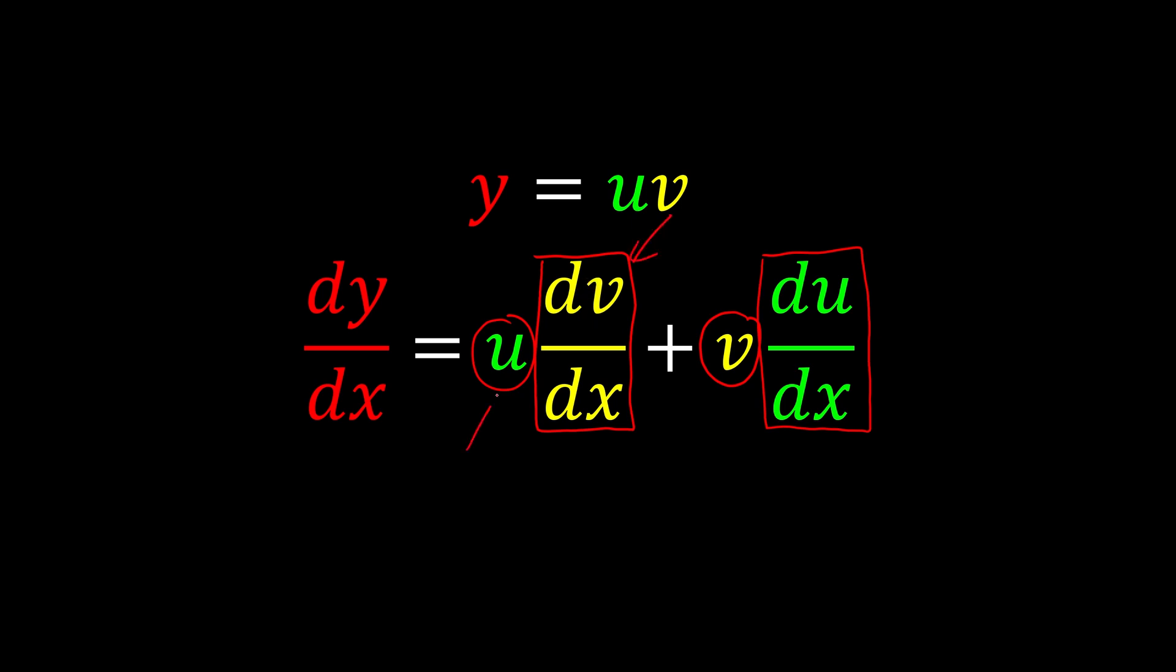So v is differentiated, u is waiting at the side. Meanwhile, when v is the one that is being differentiated, u is sitting at the side waiting. It's always original times differentiated and original times differentiated.